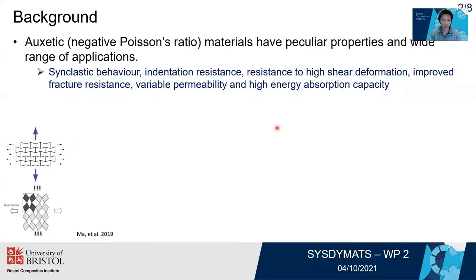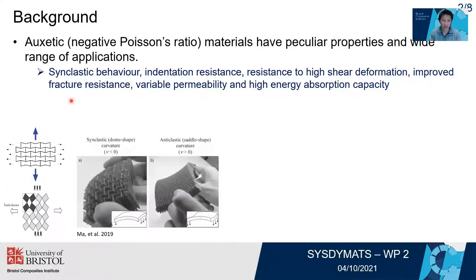Auxetic material is a kind of material with negative Poisson's ratio caused by the reentrant structure or the rotational structure inside the material. It has some peculiar properties such as the synclastic behavior — when under bending, the auxetic material can deform like a dome shape compared with the saddle shape of conventional material.